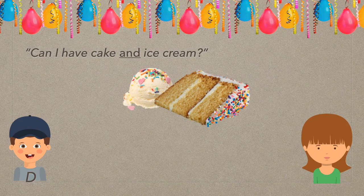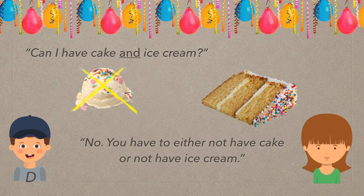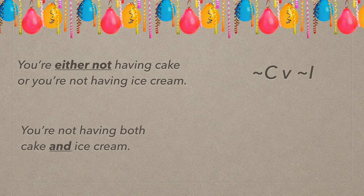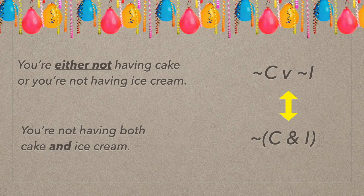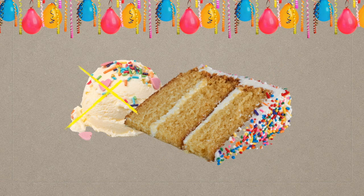Back to David — he's asking for cake and ice cream again, but this time mom says: you have to either not have cake or not have ice cream. In symbolic logic: either not cake or not ice cream. Did you spot the equivalence? The either not construction is logically equivalent to the not both construction. If you have to either not have one or not have the other, then obviously you're not having both.